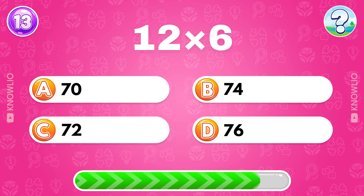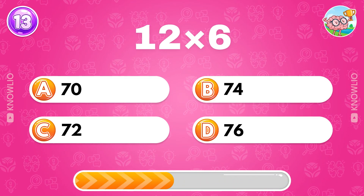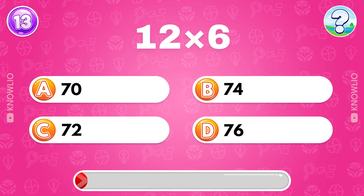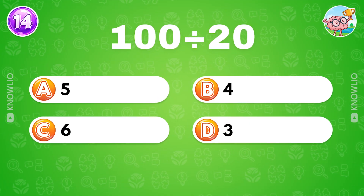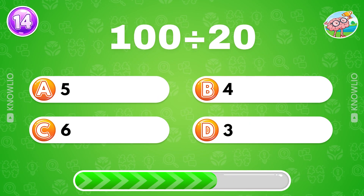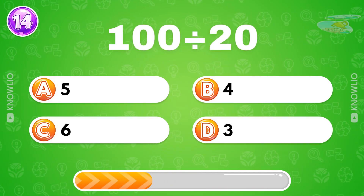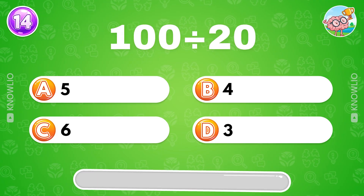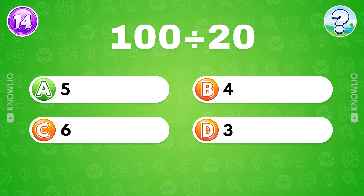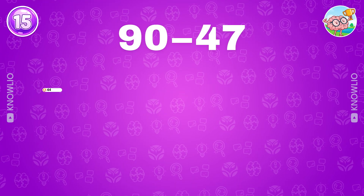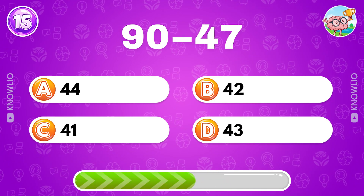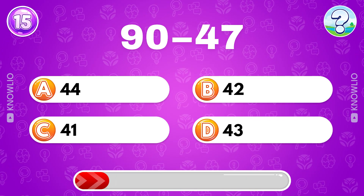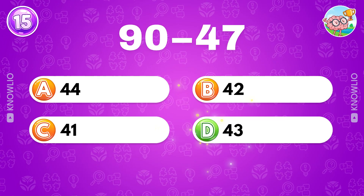12 multiplied by 6? Answer C, 72. What's 100 divided by 20? Answer A, 5. 90 minus 47? Answer D, 43.